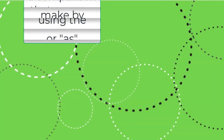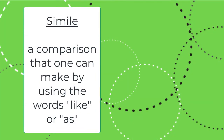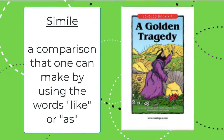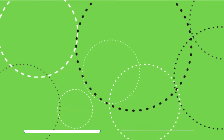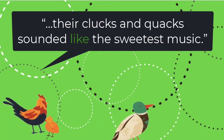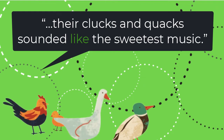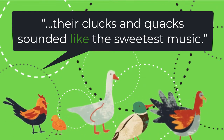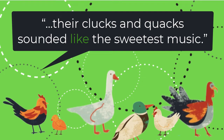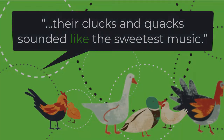A simile is a comparison that one can make by using the words like or as. We can find an example of this in A Golden Tragedy. When describing the birds in King Midas's kingdom, the author says, 'their clucks and quacks sounded like the sweetest music.' This is considered a simile because it is comparing the birds' sounds to music by using the word like. This helps the reader to really imagine the sounds of the birds.